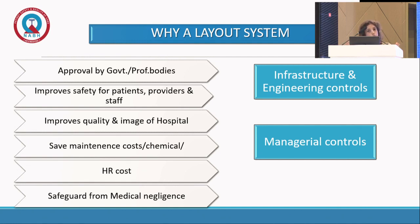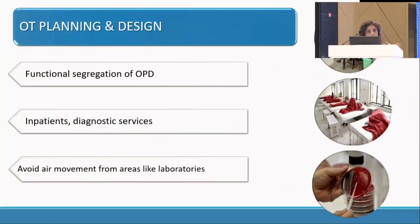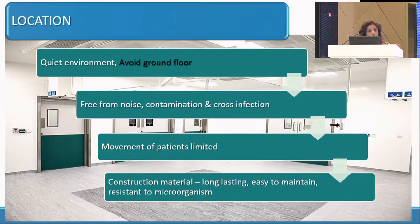This needs to be dealt with under two headings: infrastructural and engineering control, which starts prior to construction of an OR, and managerial control, which comes after the OR is constructed. When planning an OT, the location should have functional segregation from the OPD — preferably at a top floor if your OPD is on the ground floor — and also segregation from the laboratory and inpatient areas. Materials should be long-lasting, easy to maintain, and resistant to microorganisms, and it should be in a place where movement of patients is limited.